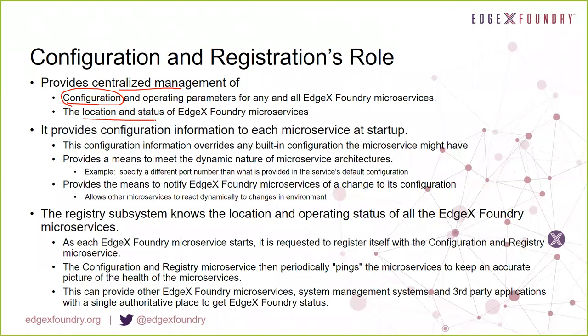We call it key-value pairs because in configuration it's usually just a name associated to a value, and the program uses the value by that lookup name — similar to Windows INI files. The configuration registration service also provides location and status of the various microservices, allows configuration to be overridden, and supports dynamic situations where you want to change configuration information on the fly during runtime — enabling microservices to move around in an environment or change settings for different programmatic operations.